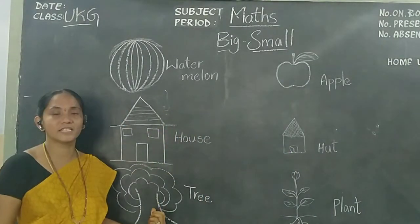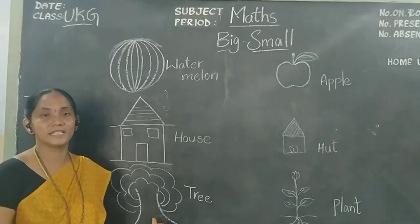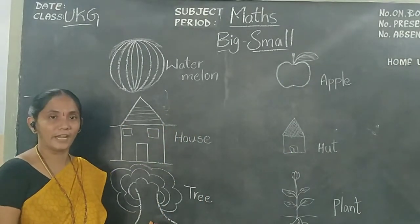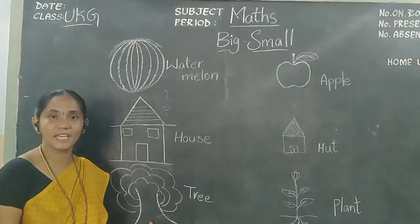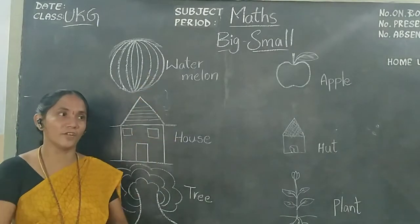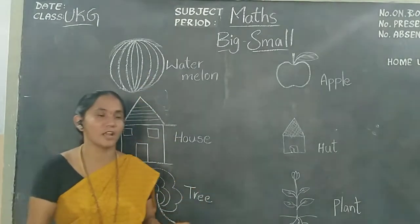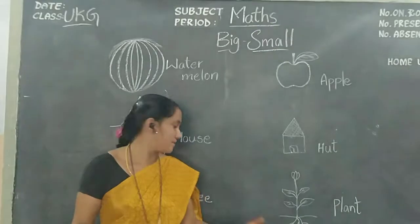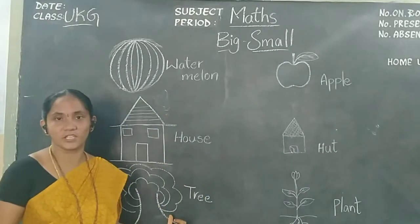What is this, children? This is a tree. It looks very big — trees in your houses and surroundings. Big trees.